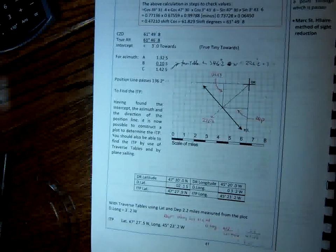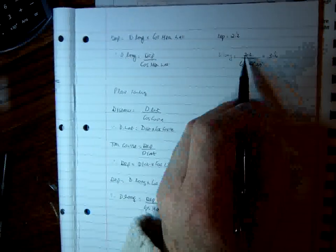What we then do, we use the mean latitude. So we have a mean latitude of 47 degrees 29. We know our departure, which is 2.2, that we measured.